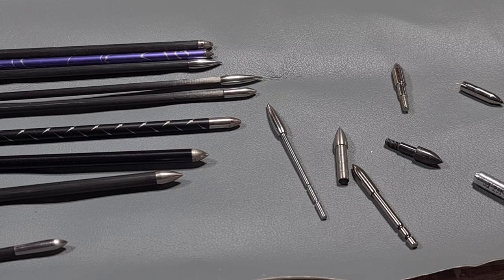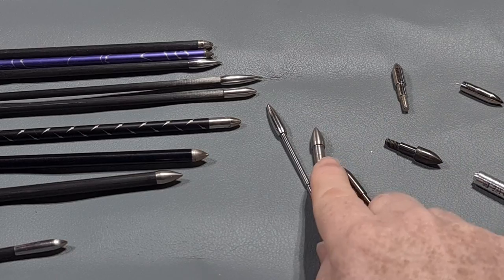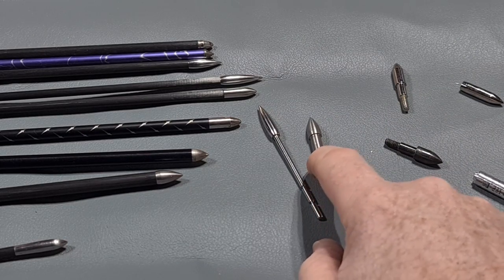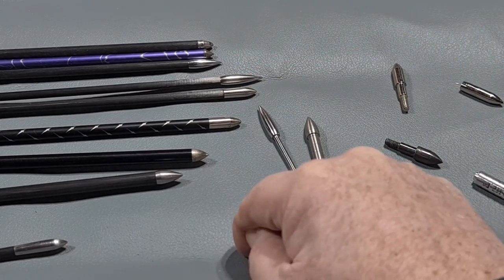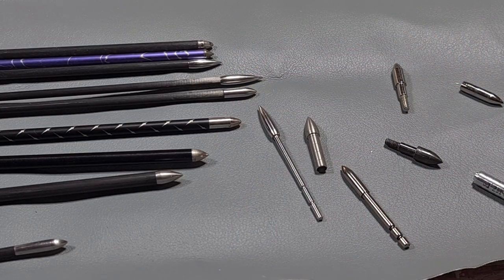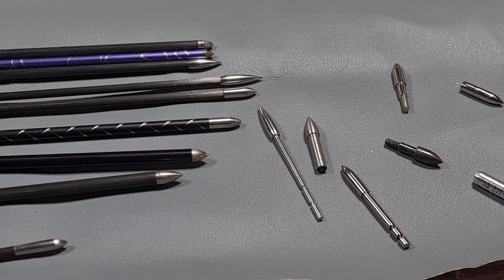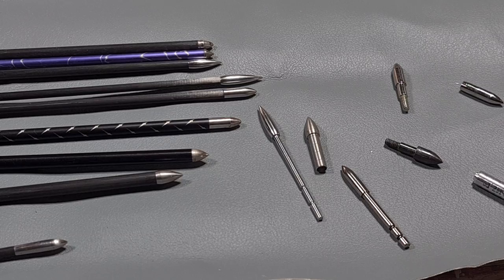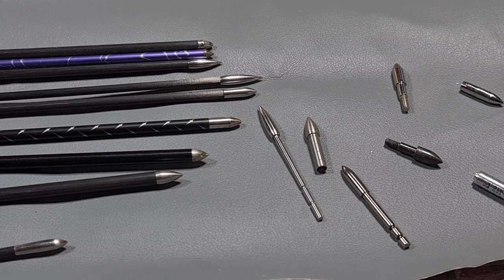This is just a quick look at arrow points, all the different ones out there that you use for target, field and clout. Again, for clout, I use big arrows and I use really heavy points. So when the arrow comes in, it comes in at an incline, not a flat angle. So it sticks in the ground well and you can see your arrows. It's worked well for me so far. So I hope you've enjoyed this quick video on arrow points.